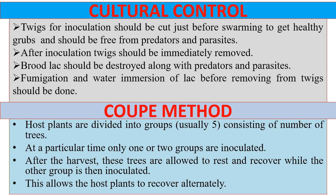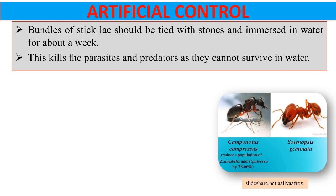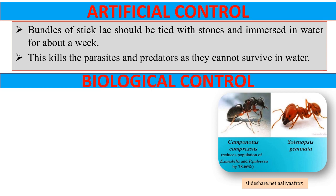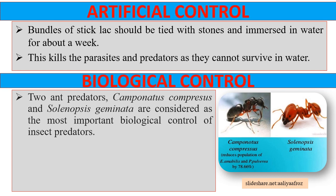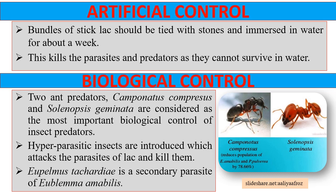Next, we have artificial control. In this method, bundles of stick lac are tied with stones and immersed in water for about a week. This kills the parasites and predators as they cannot survive in water. Lastly, we have biological control. It is an indirect method for killing the parasites and predators. In this method, ant predators such as Camponotus compressus and Solenopsis germinata are considered the most important biological control agents. These two species are considered to reduce the population of E. amabilis and P. pulveri by 78.6%. Sometimes hyperparasitic insects are introduced which attack the parasites of lac and kill them. For example, E. palmar stachardi is a secondary parasite of E. amabilis.